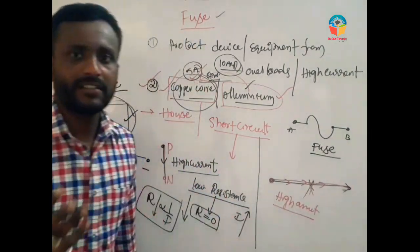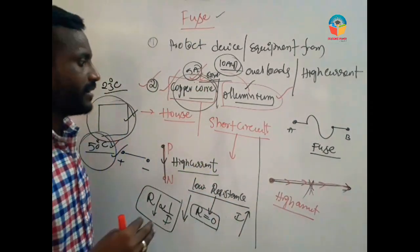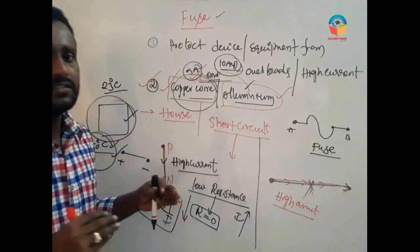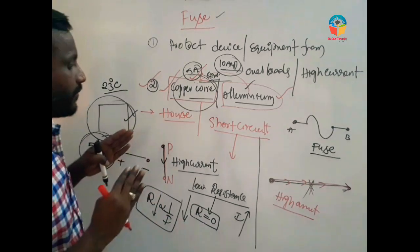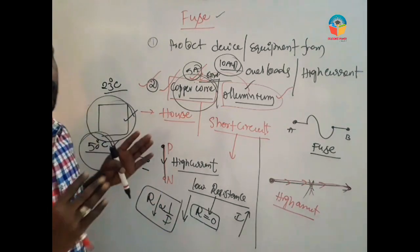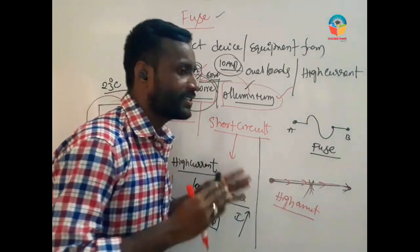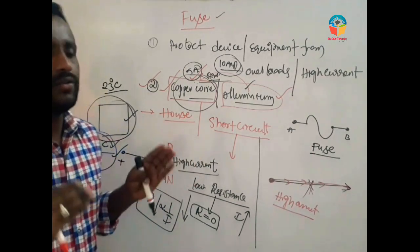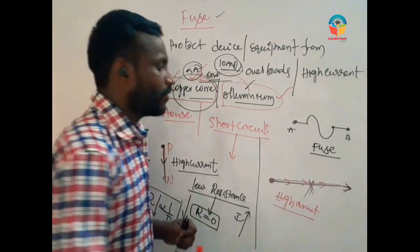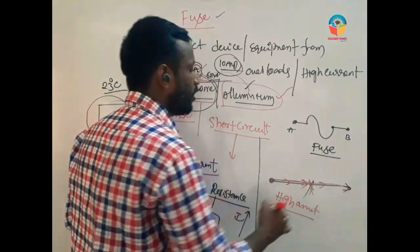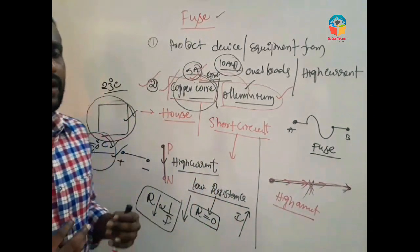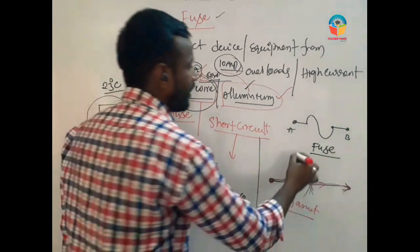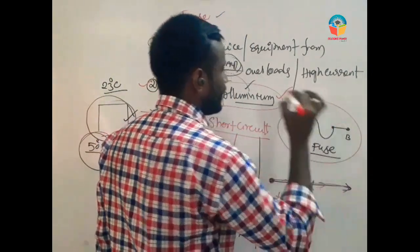Once the fuse melts, there is no current passing through the device and there is no current passing through the circuit. The fuse burning state depends upon the temperature melting point and the amount of current passing through the wire. The amount of current passing through the fuse determines when it will melt, acting as an open circuit to protect the device.